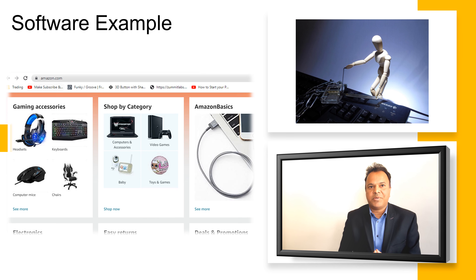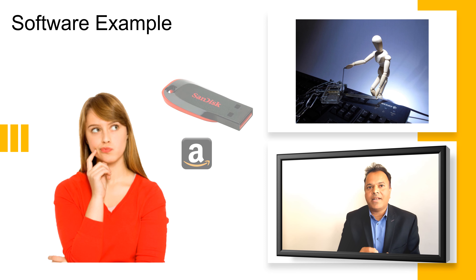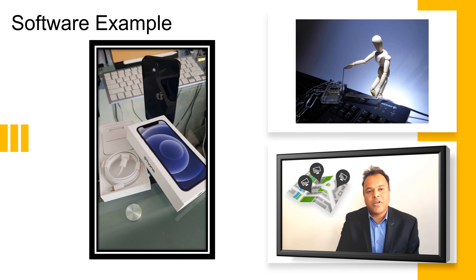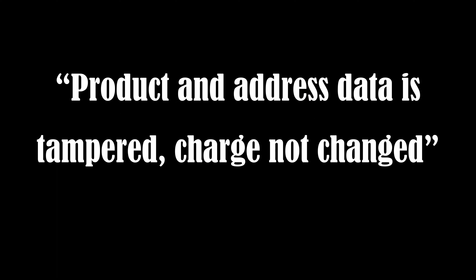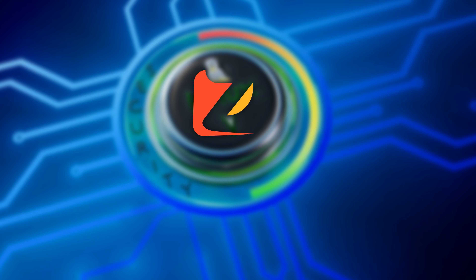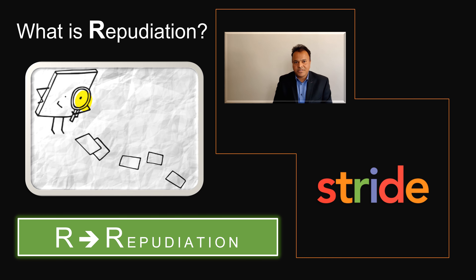In software applications, tampering can be quite serious. Imagine you are shopping on Amazon or Flipkart and you purchase a pen drive for five or ten dollars. An attacker does a man-in-the-middle attack, intercepts your request midway, changes the product to an iPhone or MacBook Air, and changes the delivery address to their own — while leaving your credit card details and session cookie intact. The attacker effectively receives an expensive item for free due to data tampering.